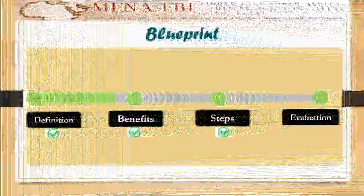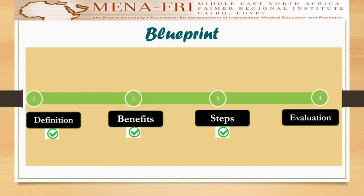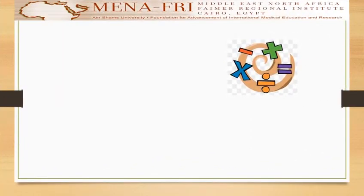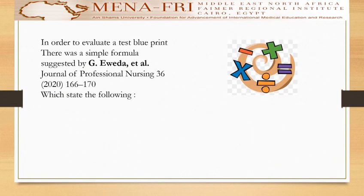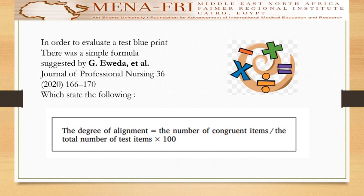As we have seen, we have passed through the definition, the benefits, and the steps. Now for our last topic: how to evaluate your own blueprint or others' test blueprints. In order to evaluate your test blueprint, there is a simple formula suggested by Geoveda Etel in the Journal of Professional Nursing 2022, which states: the degree of alignment equals the number of concurrent items divided by the total number of items, multiplied by 100.